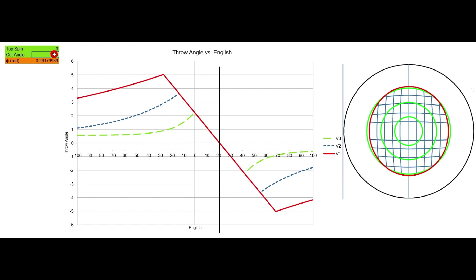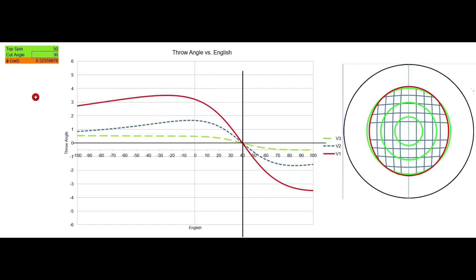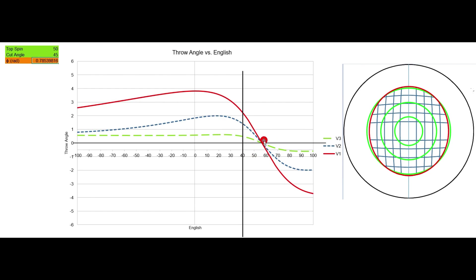Increasing the angle to 30 degrees, gearing English has moved to roughly 40% sidespin. With or without topspin, it still hasn't moved — you need about 40% sidespin for a 30-degree cut. For a 45-degree cut, the gearing English moves again to a little more than 55% spin — just past the 50% line between 50 and 75. And for a 60-degree angle of cut, gearing English moves to just shy of 70-75% spin. So gearing English for different angles of cut requires different amounts of spin.